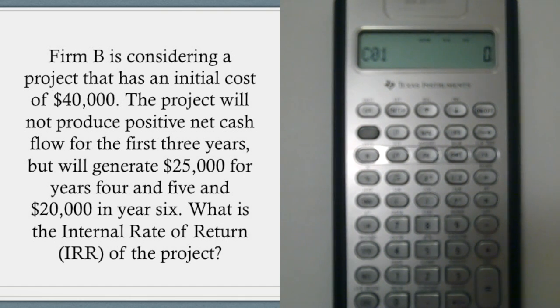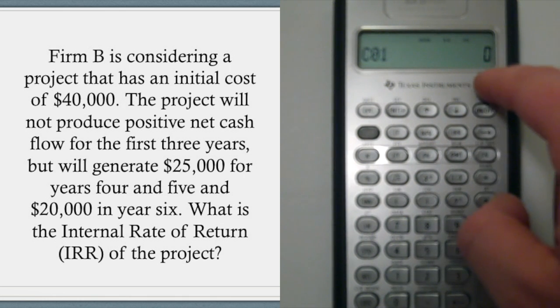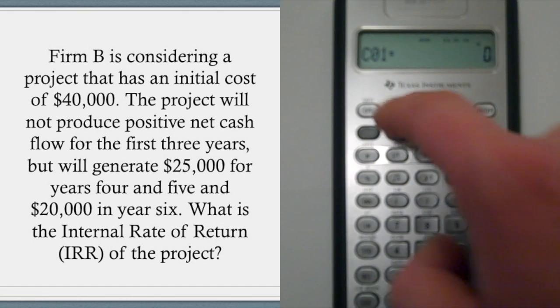And this will be our first cash flow. So in this case, the project isn't generating cash flow for the first three years. But instead of entering $25,000, initially we're going to enter zero. So go ahead and hit zero. It should already show up there if you haven't had anything else in there. And then go ahead and lock it in. Press enter.